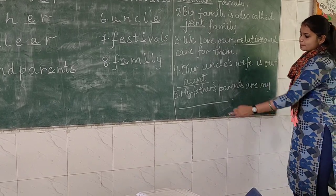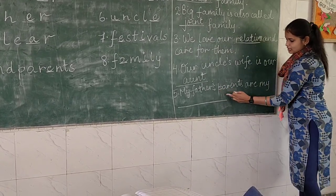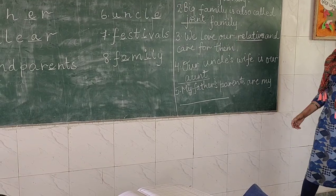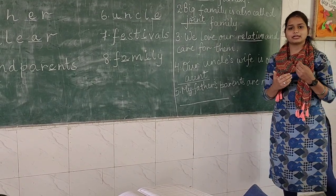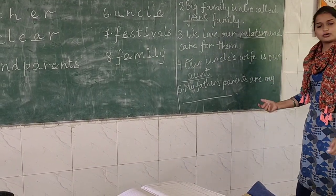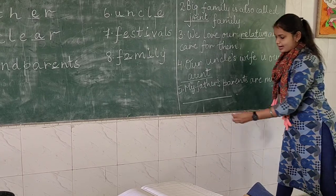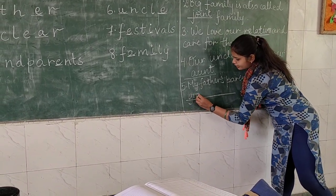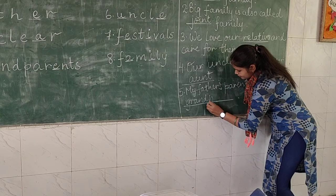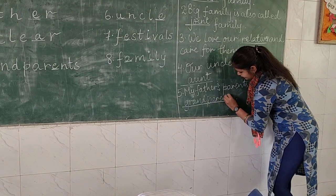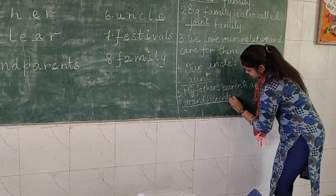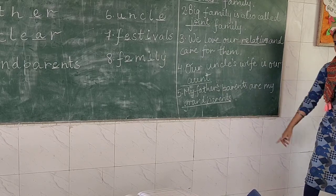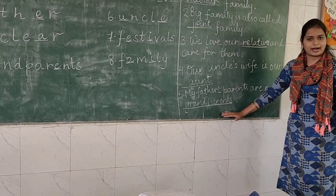Now the last fill-in-the-blank: 'My father's parents are my dash.' Your father's parents are your grandparents. So you will write G-R-A-N-D — grand — P-A-R-E-N-T-S — parents. The correct word is grandparents. My father's parents are my grandparents.